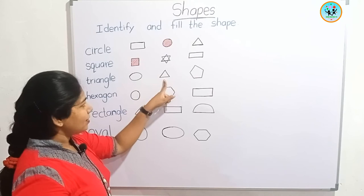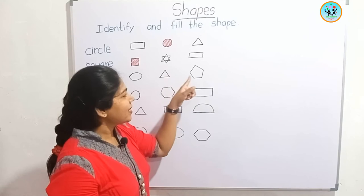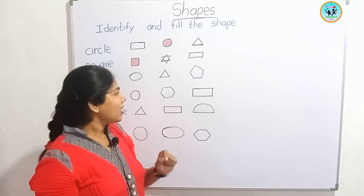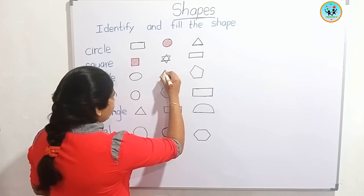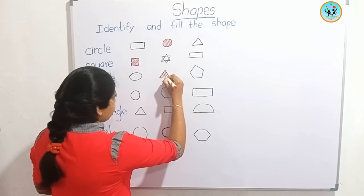Third one — triangle. What is this shape? Oval. This is triangle. We found the triangle. Now we can fill it. How many sides are here? Three sides.